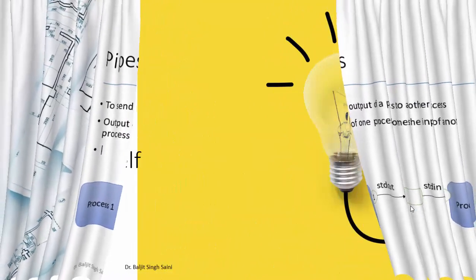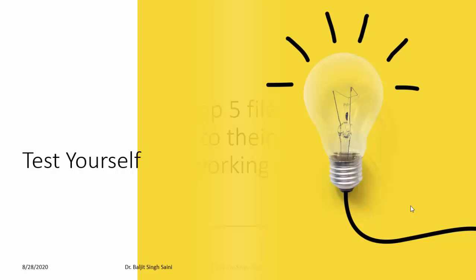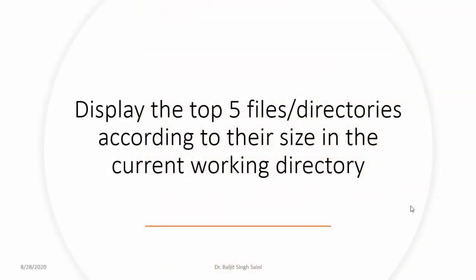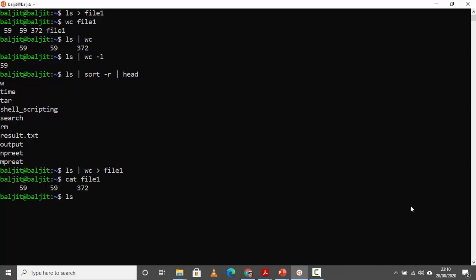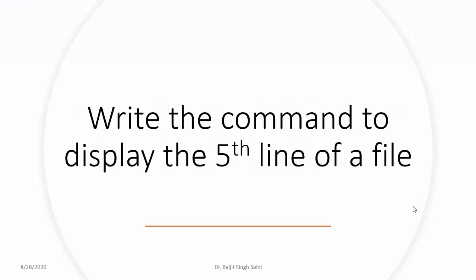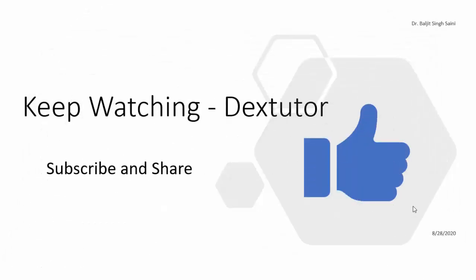Now it's time to test yourself. First question: display the top five files or directories by size in the current working directory. The answer is ls -S | head -n 5. Next question: write the command to display the fifth line of a file — explore and share your answers in the comments. That was all about redirection and pipes. Keep watching, keep sharing, do subscribe, and see you in the next class.